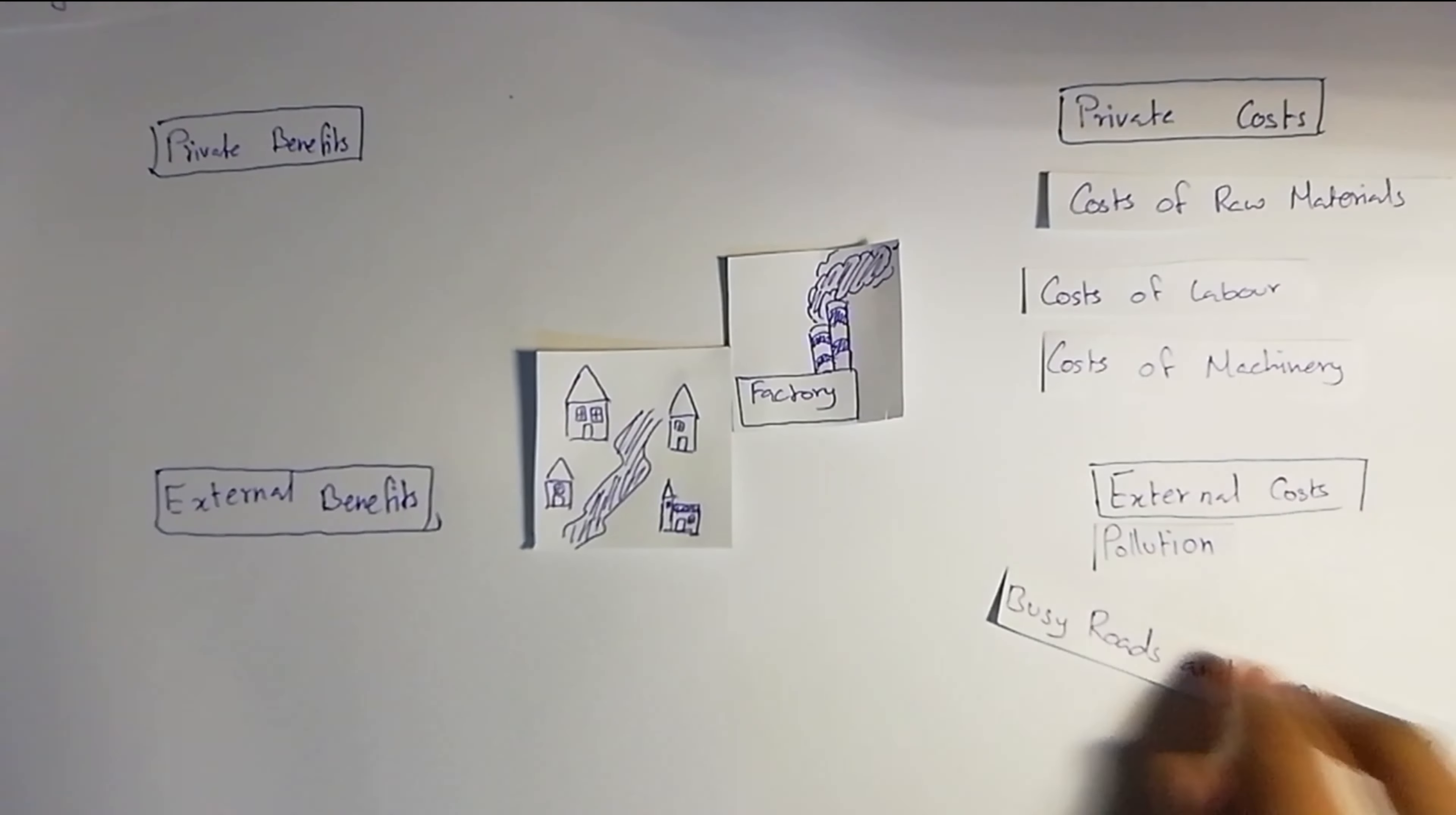Then busy roads, because all of the products which are going to be given out by this factory are going to have to go to the marketplace, and that road is going to be busy. Same with the raw materials coming in. Diseases—now this is from the contaminated water that we talked about. Because of water pollution, that can cause diseases.